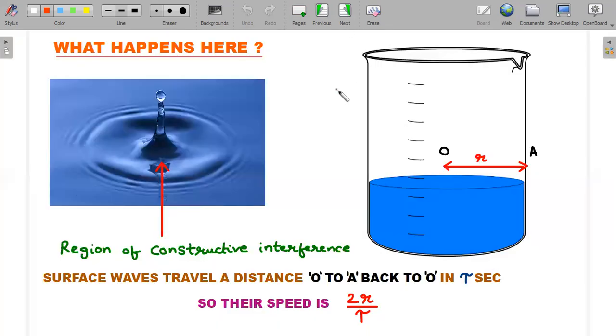So what is happening here? You might have seen this in real life also. When you drop something, there will be some ripples that would be created, also known as surface waves, which travel radially outward in all directions. So imagine this kind of a ripple is created at the middle of a beaker whose cylindrical radius has been mentioned in the question.